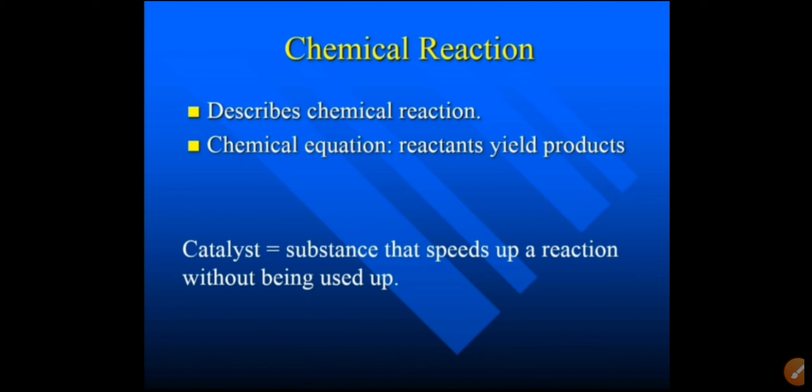To the left-hand side of the chemical equation, reactants are written, and to the right-hand side, the product is written. Sometimes a catalyst is used in the reaction to speed up the reaction. A catalyst is a substance that speeds up a reaction without being used up.